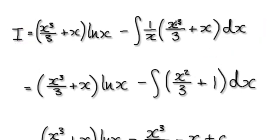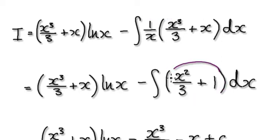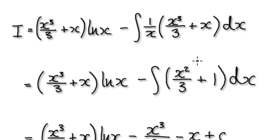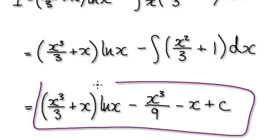So now multiply this out — that will then give you this. This is now straightforward to integrate. If you integrate this thing here, it will give you this. So this here is your final answer.